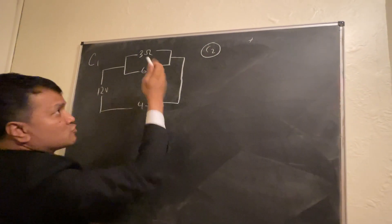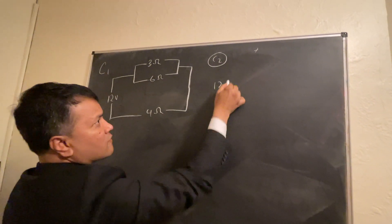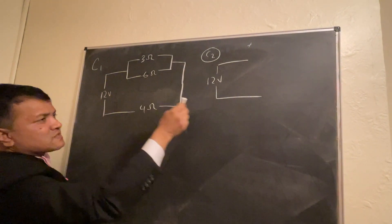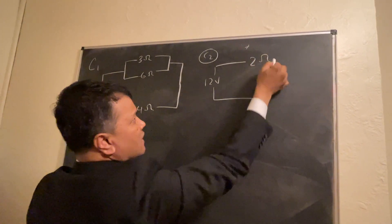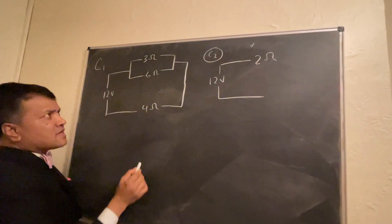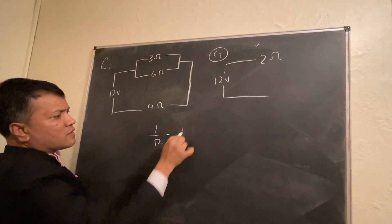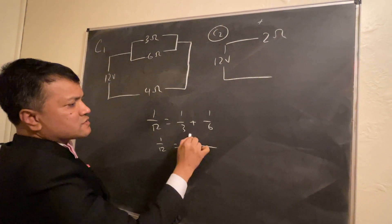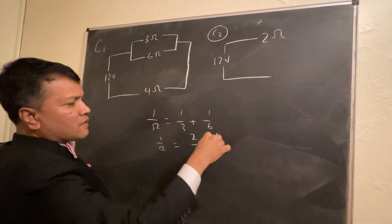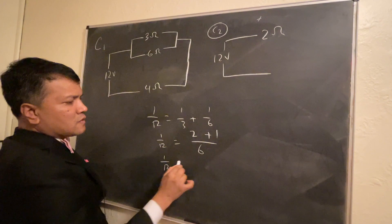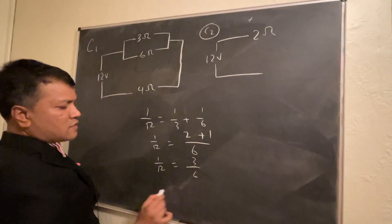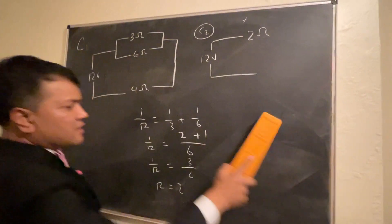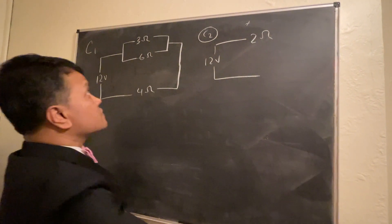Circuit two will have two resistors with 12 volts. By Ohm's Law, three plus six in parallel gives two ohms. One over R equals one over three plus one over six, so one over R equals two-sixths plus one-sixth, and R equals two ohms. This is how you get equivalent resistance.